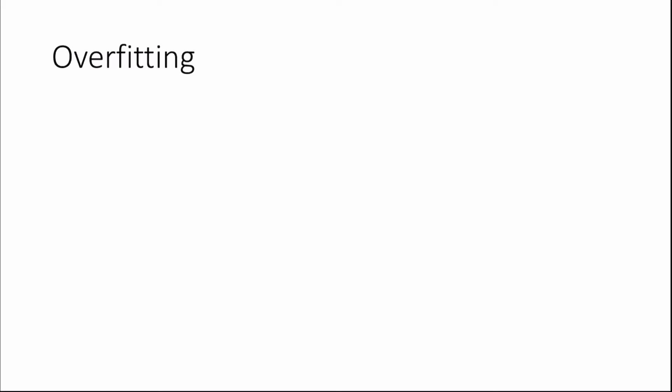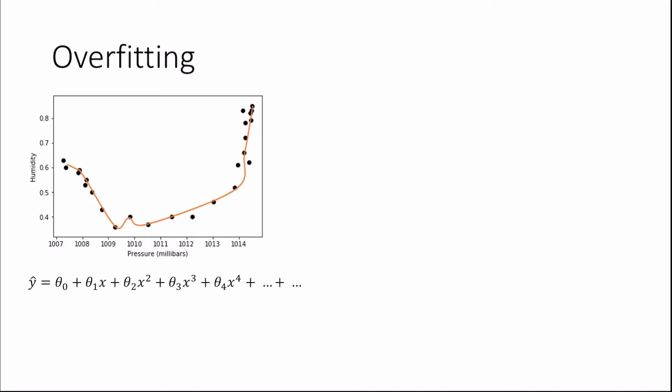The opposite of underfitting is overfitting. We can look at the following model which overfits our data and we can see visually that there's a difference — our model definitely follows the data points much more closely. Models which overfit our data tend to have a high variance and a low bias, the exact opposite of models which underfit, and they tend to have many features.